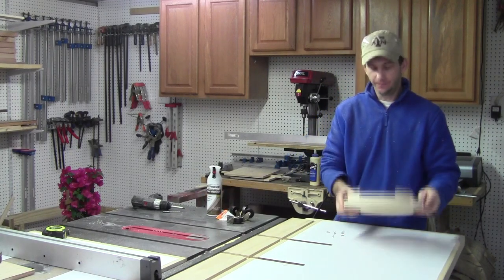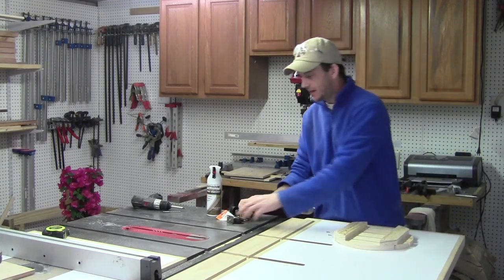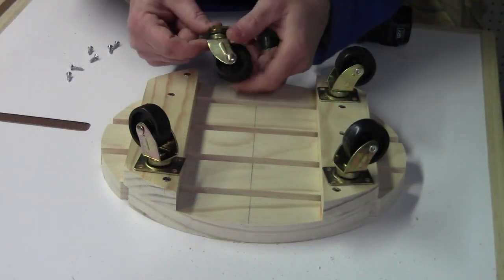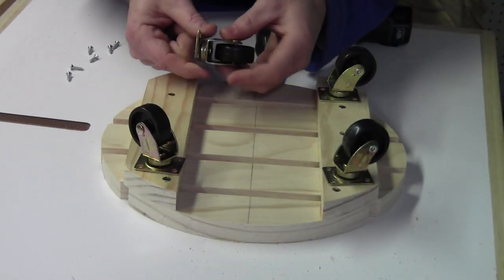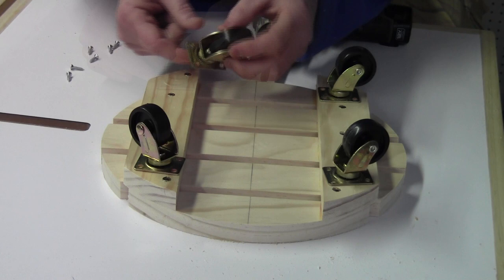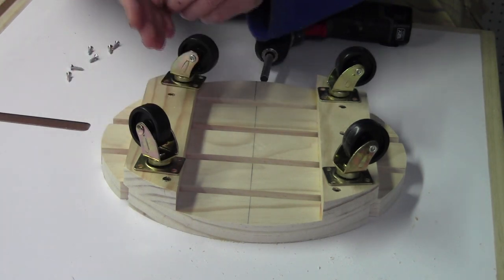And once you put the finish on, you can go ahead and add your four casters. For these casters, which are inch and five-eighths roller casters with a weight limit of 50 pounds, I go ahead and use these number six, five-eighths inch screws.